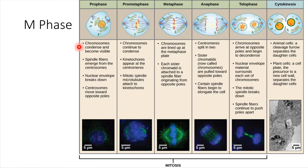Another thing that's taking place is that the chromosomes themselves condense — they sort of contract up together into smaller bits. And this is actually visible with a microscope; we could see this if we were to look at a dividing cell.